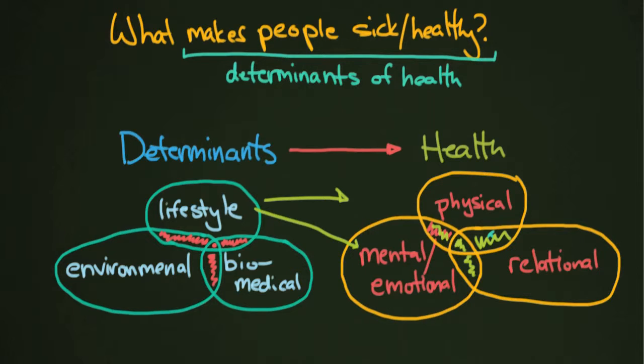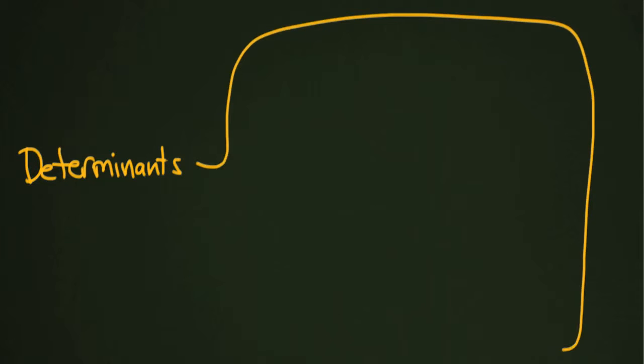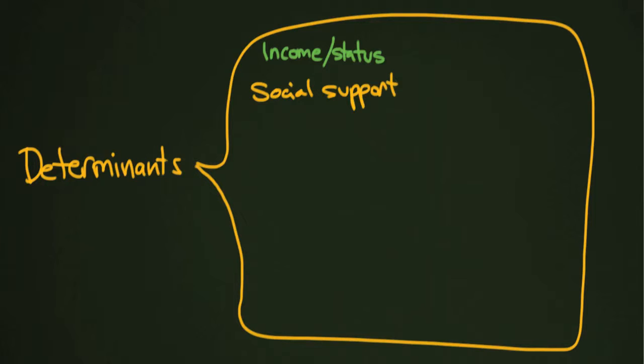So what are these determinants of health? I'm just going to write determinants over here, and I'm going to make a really big bubble. I'm not going to divide them up into groups because they're going to be different for every single person and every single case of something that comes up. So income and status is one. How much money people are making has a big effect on their ability to make money and to do things like get health care. Next is social support. So whether you have people in your lives who are helping you out, taking care of you, people networks that are kind of there for you if you need help.